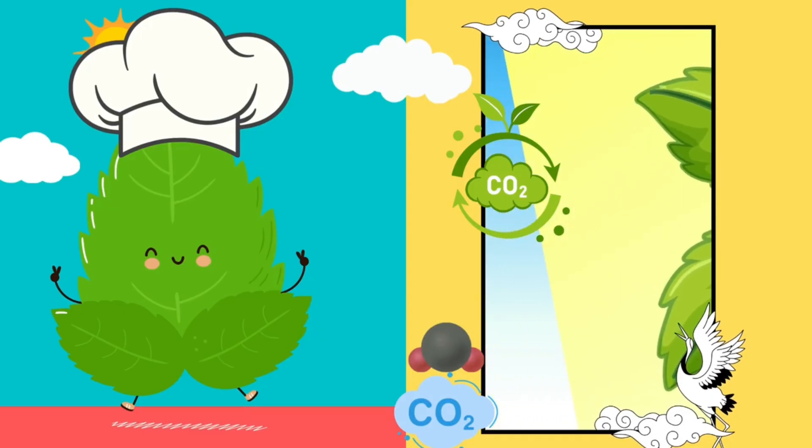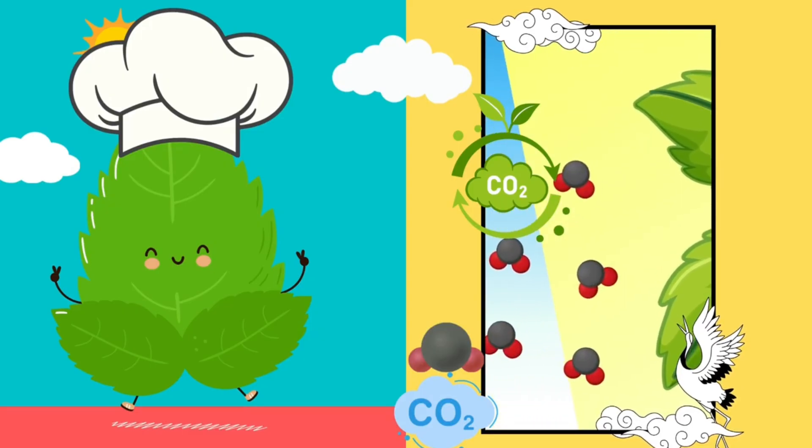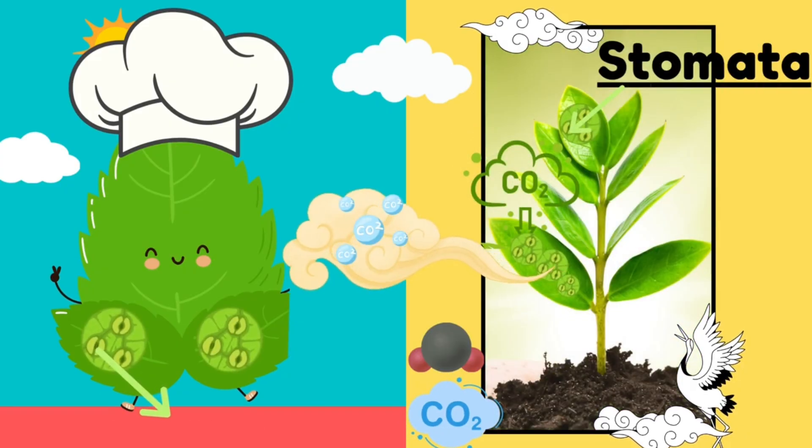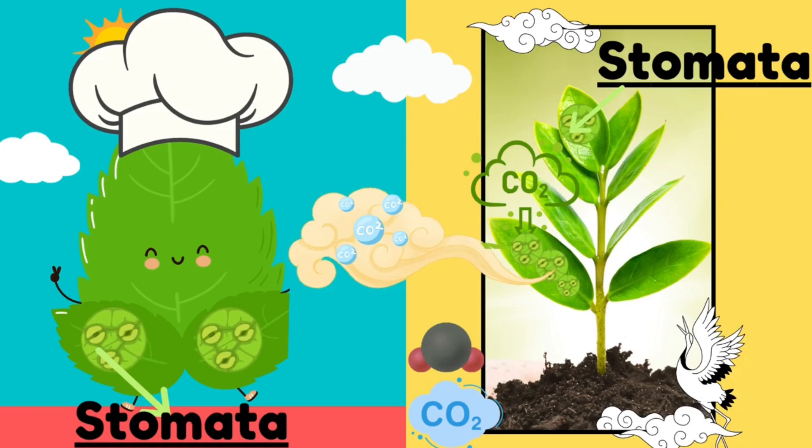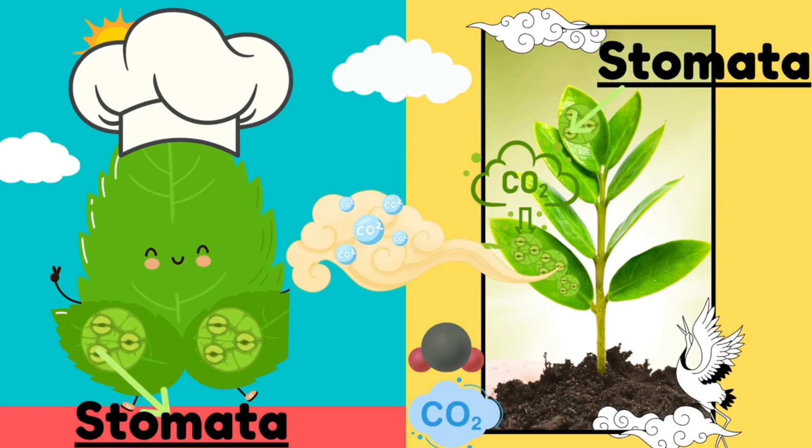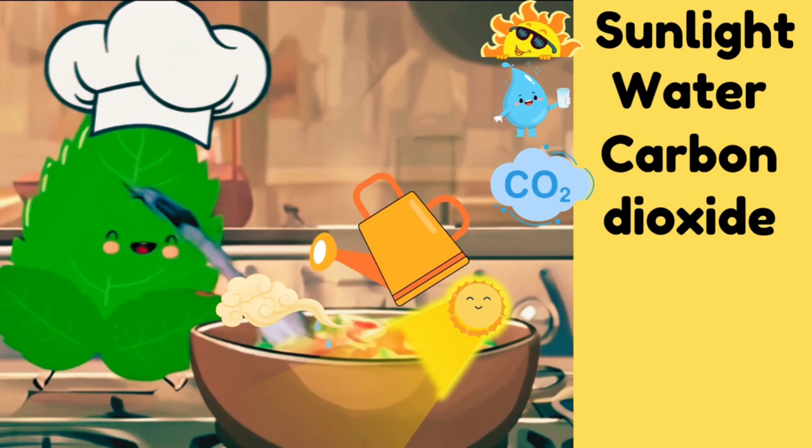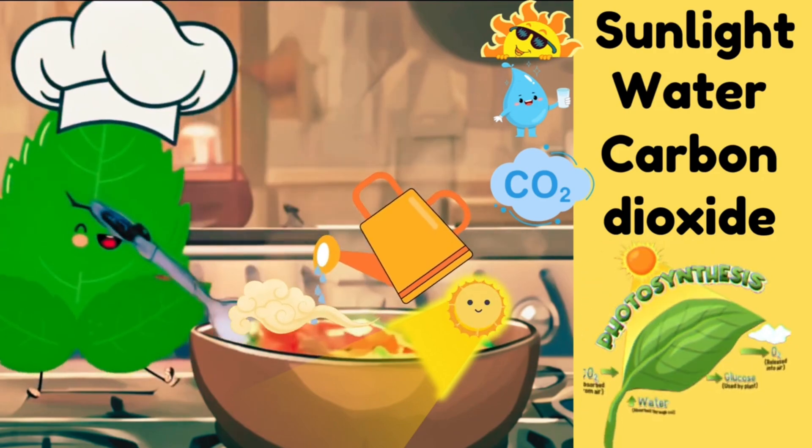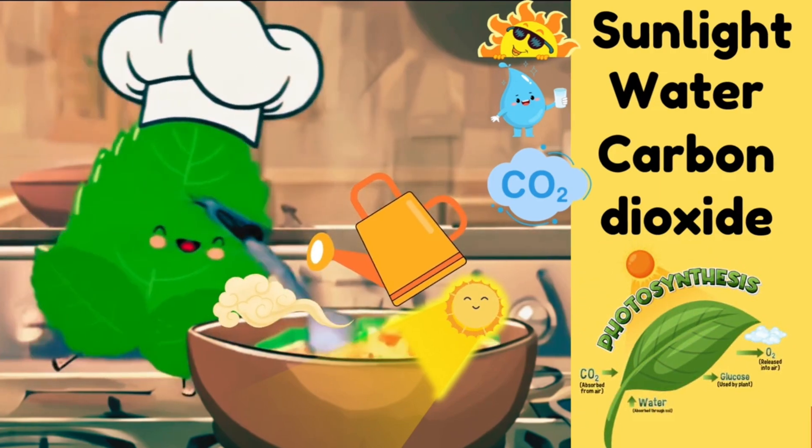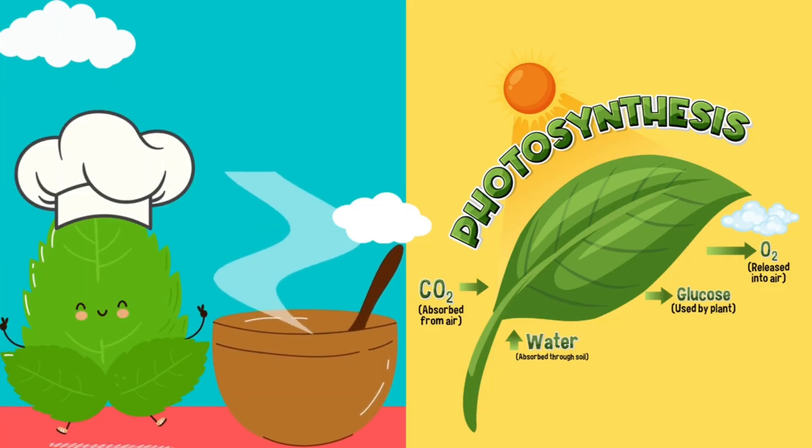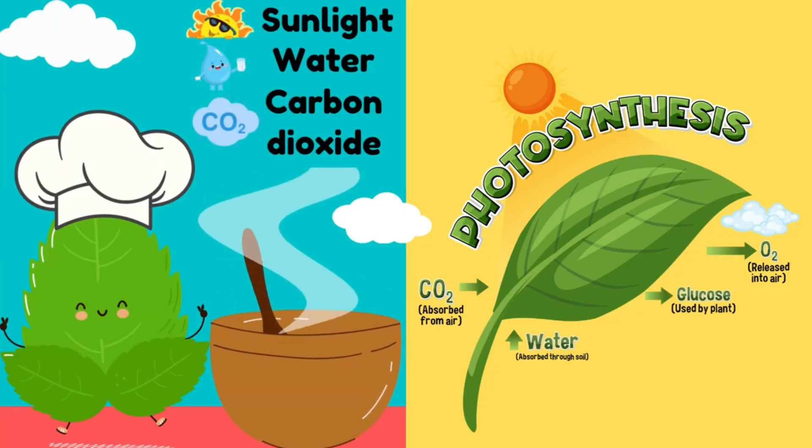Carbon dioxide, a gas from the air which enters the leaf through tiny holes called stomata. Now let's look at the cooking process: photosynthesis. The kitchen is ready, the chef is ready, and the ingredients are here.